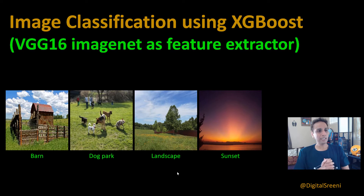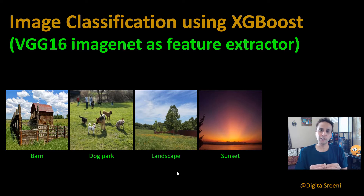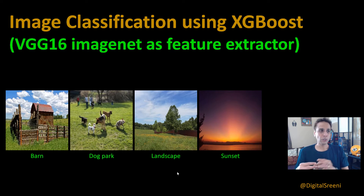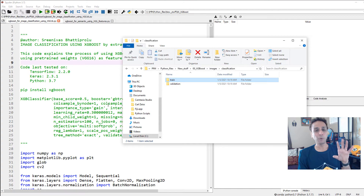Now in this video let's look at this specific image classification example using XGBoost. Anytime you're talking about image classification, you have an image, you're extracting features, and using those features to model — in this example using XGBoost. So how do we extract features? You can build your own feature extractor, but here I'm going to use the VGG16 pre-trained network, which makes it easy to extract features without defining a lot of code.